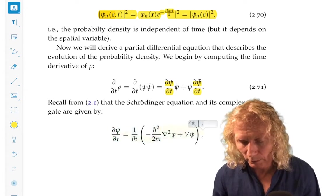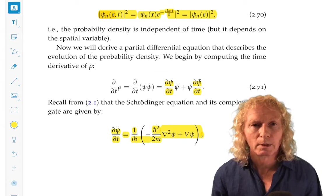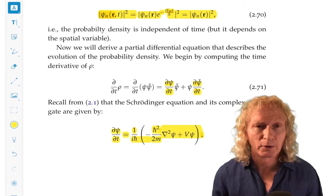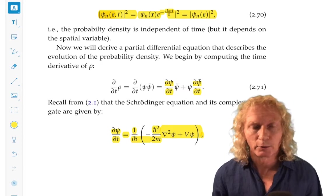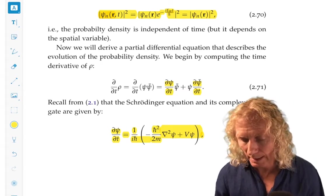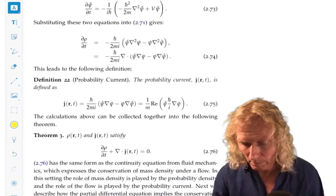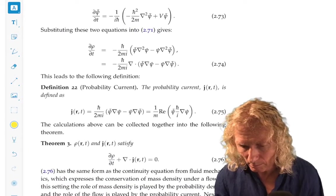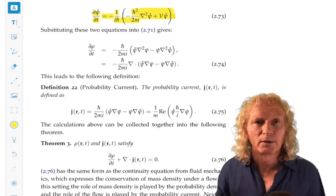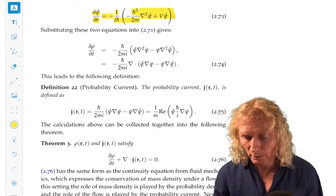This is the usual Schrödinger equation, time dependent, where I've isolated ∂ψ/∂t. We can take the complex conjugate of that and we can substitute them in to the previous equation, equation 271.